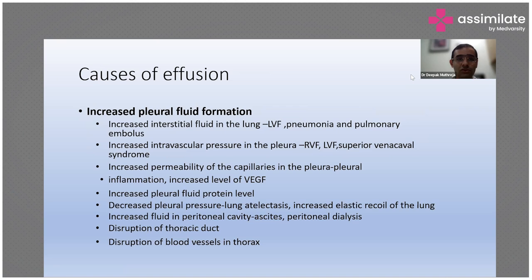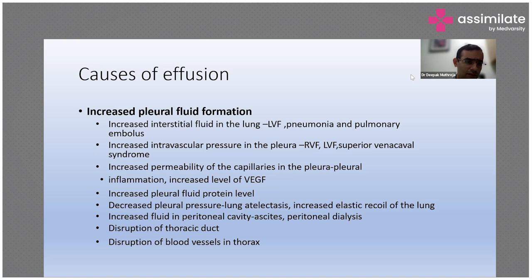What are the different causes? It can be increased fluid formation, which is because of the increase in the interstitial fluid in the lung, like left ventricular failure, pneumonia, pulmonary embolism, or increased intravascular pressure in the pleura, like right ventricular failure, left ventricular failure, superior vena cava obstruction. Then there is increased permeability of capillaries, as well as inflammation, or increase in the level of VEGF. We also have increased fluid protein levels and increased pleural pressure like lung atelectasis or elastic recoil of the lung. Then increased fluid in the interstitial cavity, like ascites, which also seeps up to the diaphragmatic surface, and disruption of thoracic blood vessels.